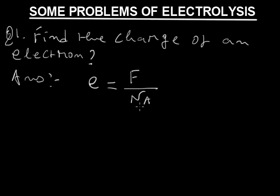The value of F is 96500 coulomb and the value of Avogadro's number is 6.022 × 10²³.